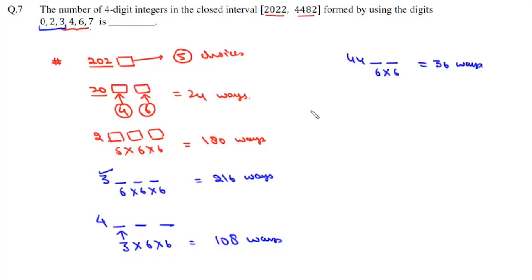So the total number of four-digit integers that can be found in this closed interval will be 5 + 24 + 180 + 216 + 108 + 36, which is 569. So the total number of such numbers is 569.